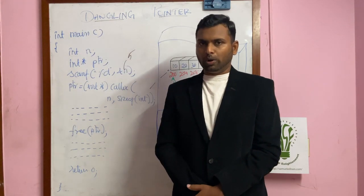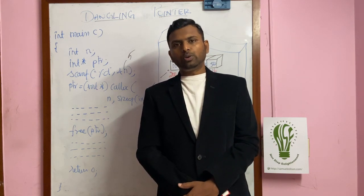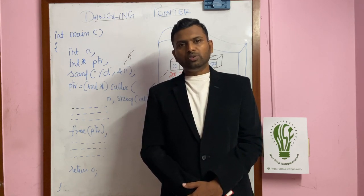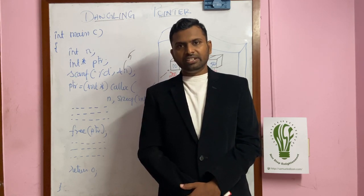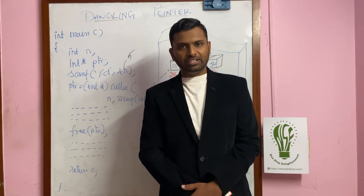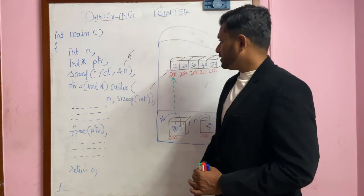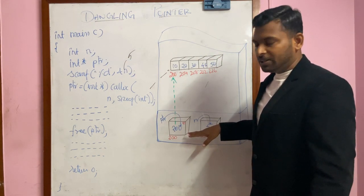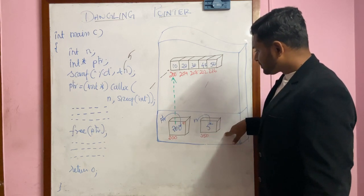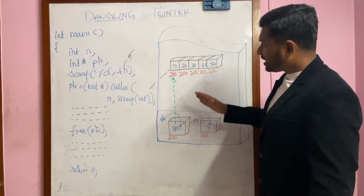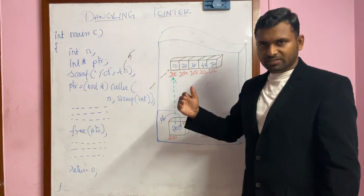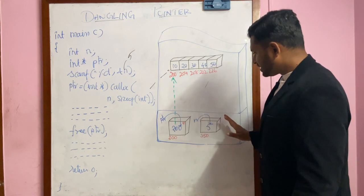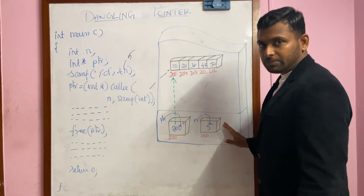In my previous video on pointers and dynamic memory allocation, I showed you how to allocate memory dynamically and how to use it. Now we are going to see how to release memory that is allocated during runtime. Whatever is allocated in the stack gets released automatically when I come out of the function or the block where I declared the variable.